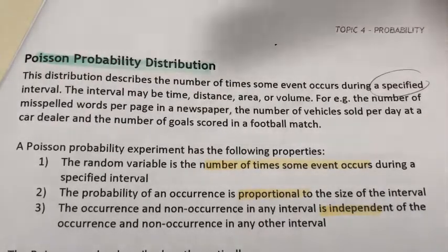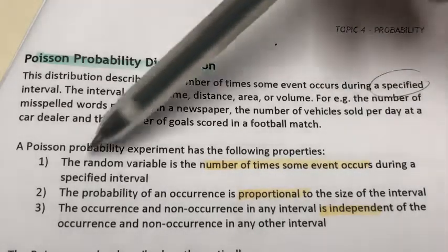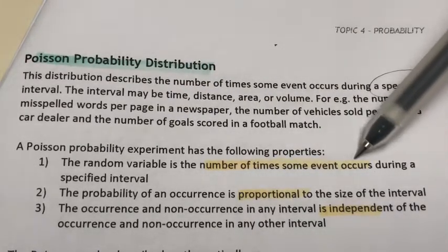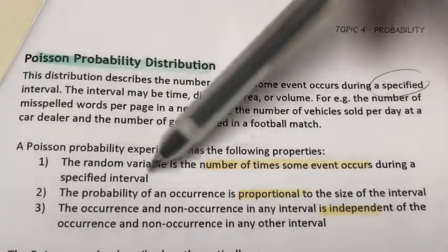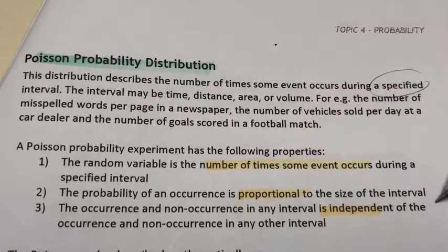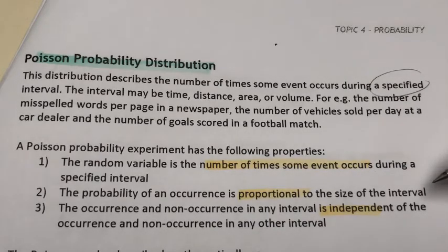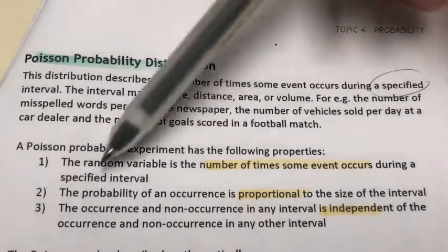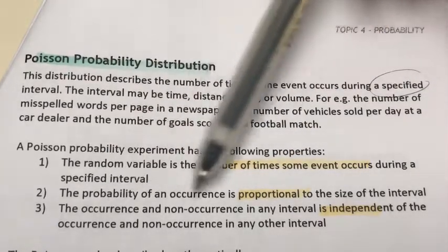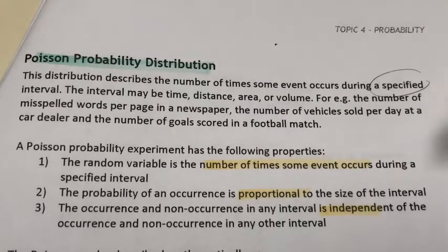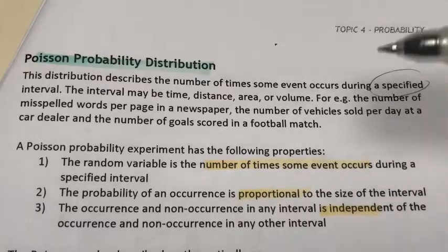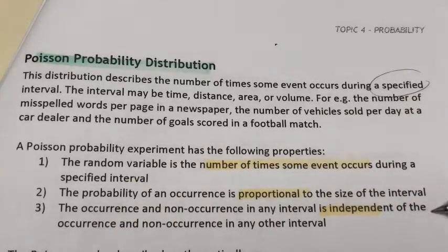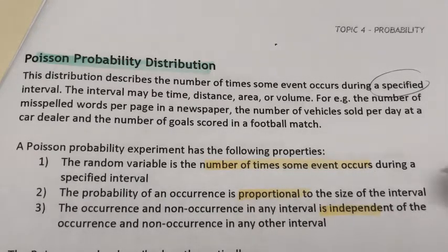For the Poisson distribution, here are its properties. First, the random variable is the number of times an event occurs during a specified interval. Second, the probability of occurrence is proportional to the size of the interval. Third, the occurrence in any interval is independent of the occurrence in any other interval — similar to the independence characteristic of the binomial distribution.